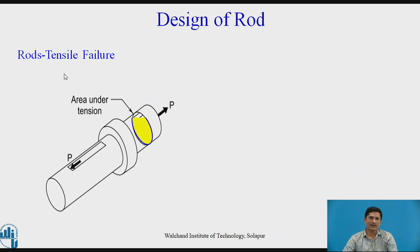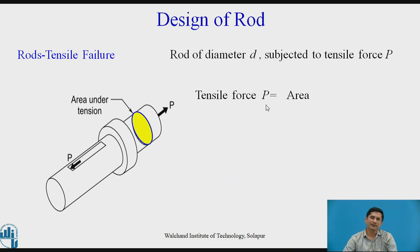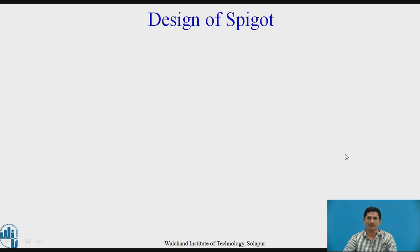Let us see the first failure, rod in tension. This is the area under tension. For this rod, diameter is D and force is P. We can very easily write the equation: tensile force P equals area multiplied by the stress. P equals area π/4 D² times σ_T.